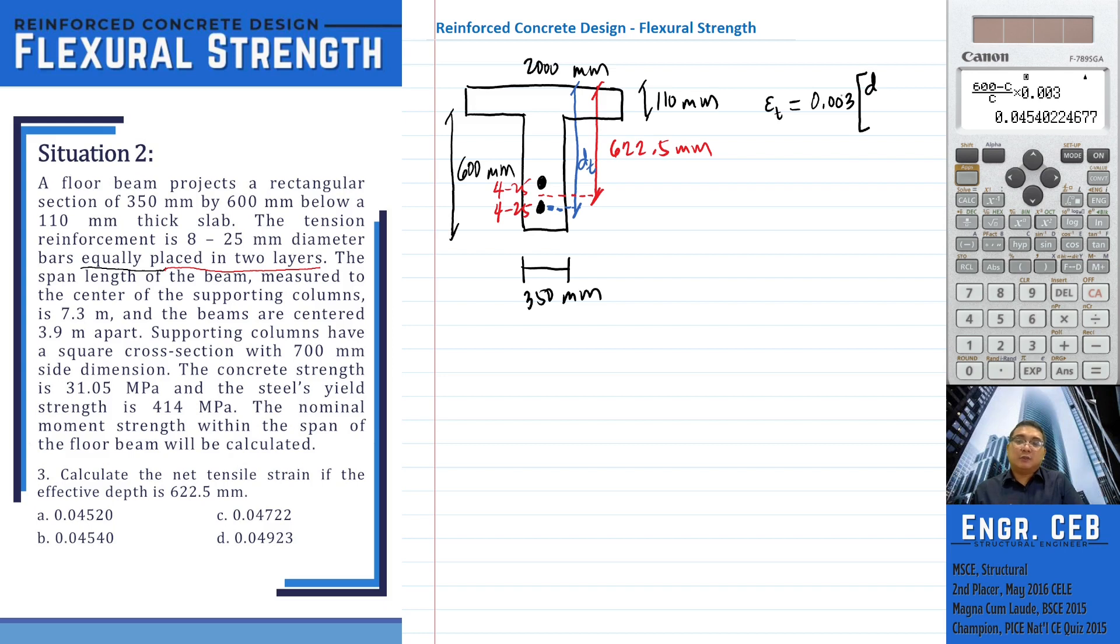But in this case, we have to be more particular since we have two layers of reinforcement. We should make this as D sub T minus C over C.